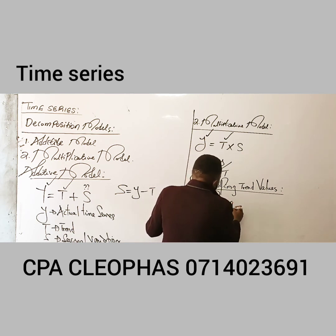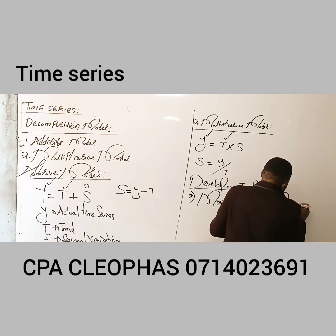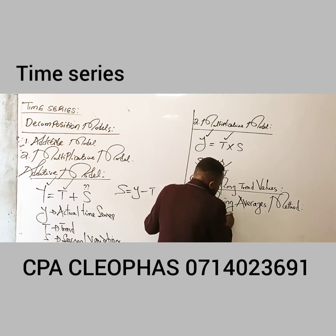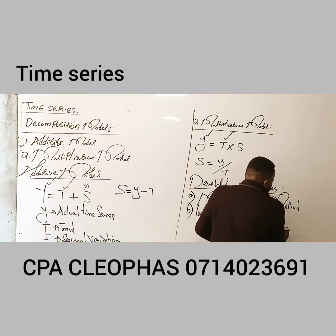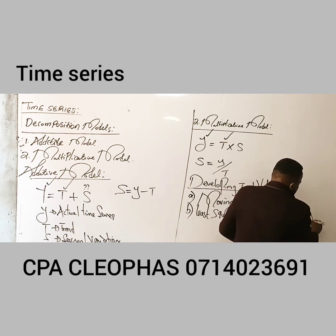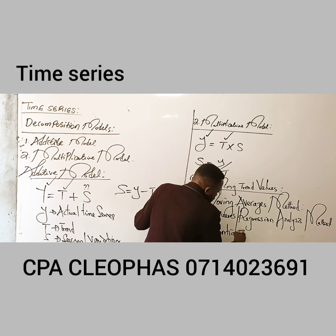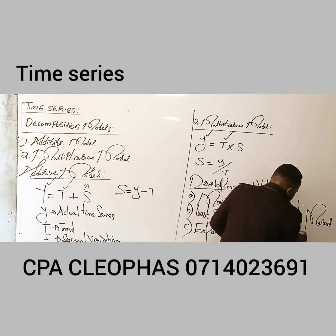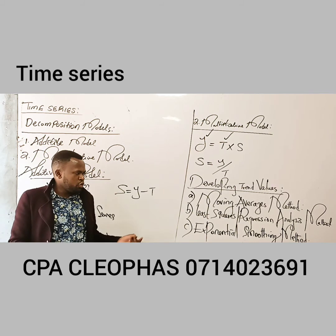Number one is the moving averages method. Number two is least squares, which is the simple regression analysis method. The last one is exponential smoothing method. So these are the three methods used to come up with the trend values.